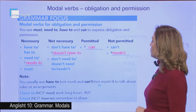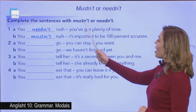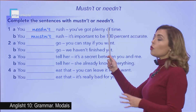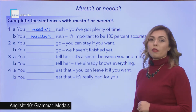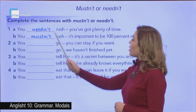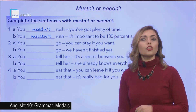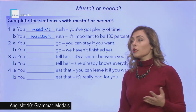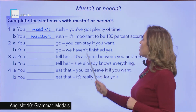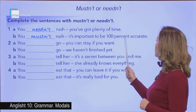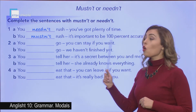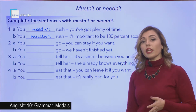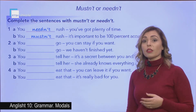Now we have an exercise where we need to choose between mustn't or needn't. Look at the example: 'You needn't rush — you've got plenty of time,' so there is no need to rush. But 'You mustn't rush — it's important to be 100% accurate,' so don't rush. Mustn't here shows an obligation — something that you have to do.